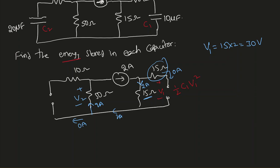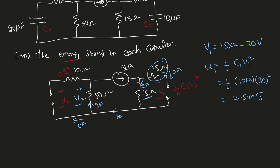The energy stored in the first capacitor U1 = half C1 V1 squared = half times 10 micro times 30 squared. 30 squared is 900, divided by 2 is 450, times 10 micro gives 4500 microjoules, which I can write as 4.5 millijoules. For U2, 2 amperes passes through the 50-ohm resistor, so V2 = 50 times 2 = 100 volts.